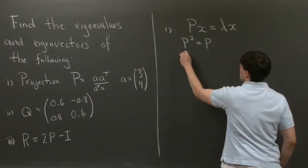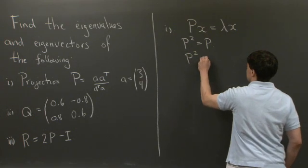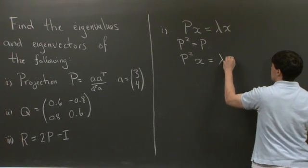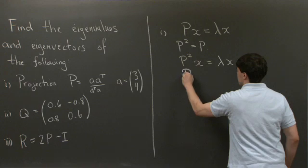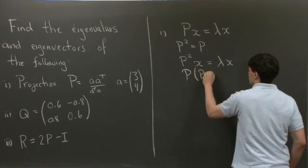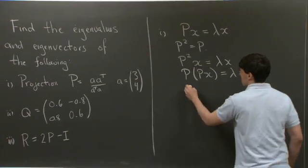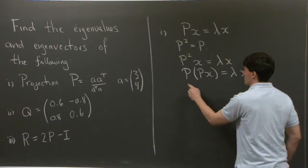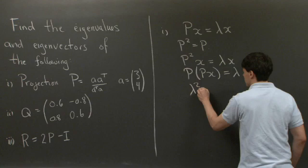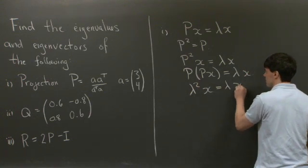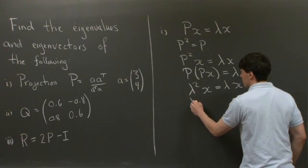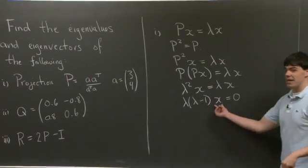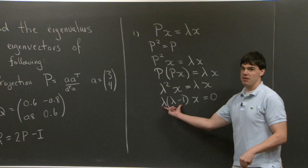Specifically, P squared x equals lambda x. So P acting on P of x equals lambda x. On the left-hand side, Px gives lambda x, and Px again gives lambda x. So we get lambda squared x equals lambda x. Bringing everything to the left-hand side, we get lambda times (lambda minus 1) times x equals 0. Because x is not the zero vector, lambda has to be either 0 or 1.